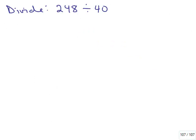Here's the problem: divide 248 divided by 40. There's no decimals here, so it's just regular division. Let's do that. 40 into 248, so 40 doesn't go into 24, and then I have to think how many times does 40 go into 248. I think that's six times.